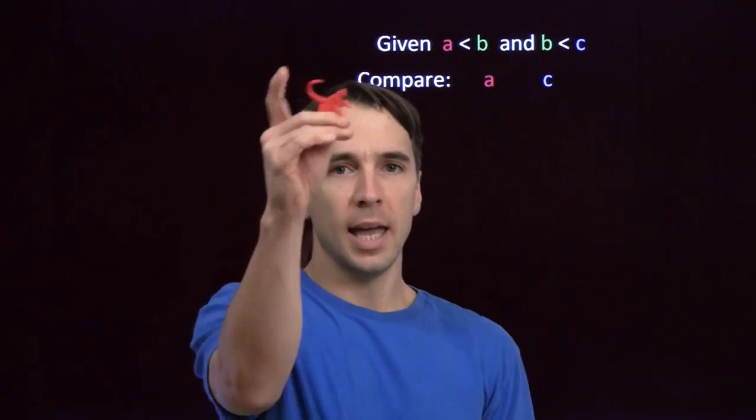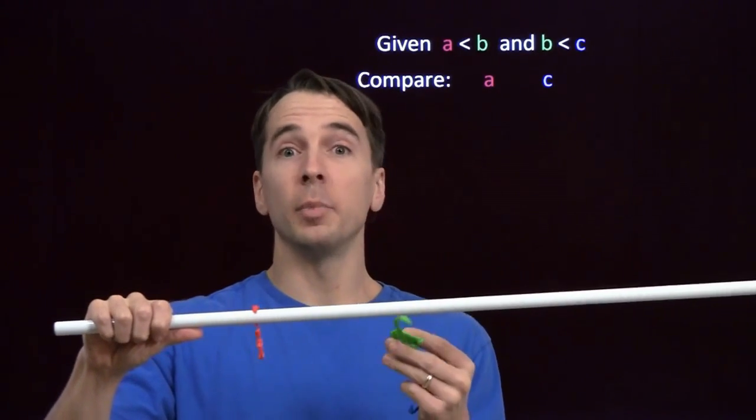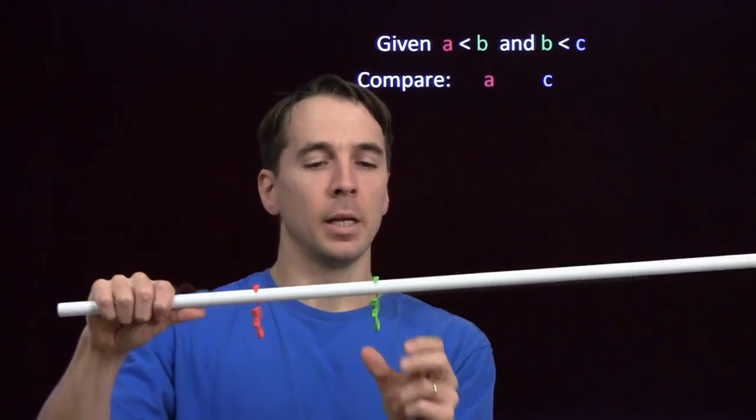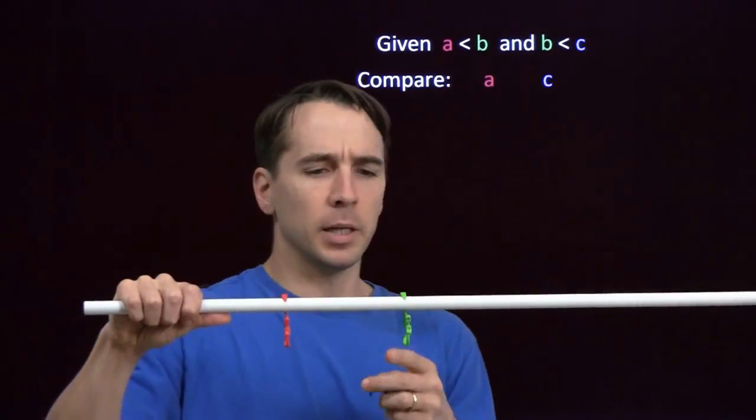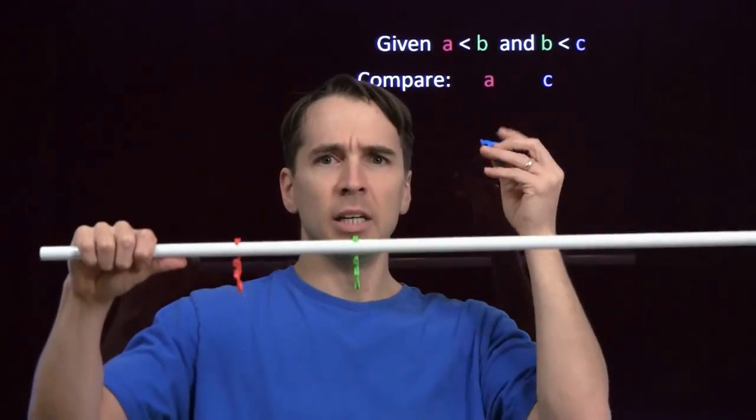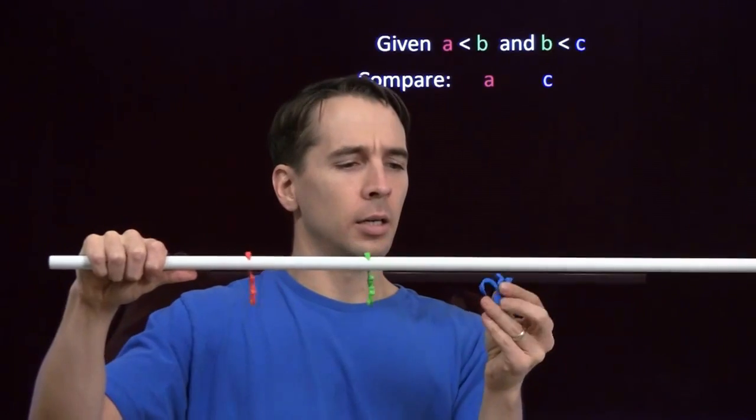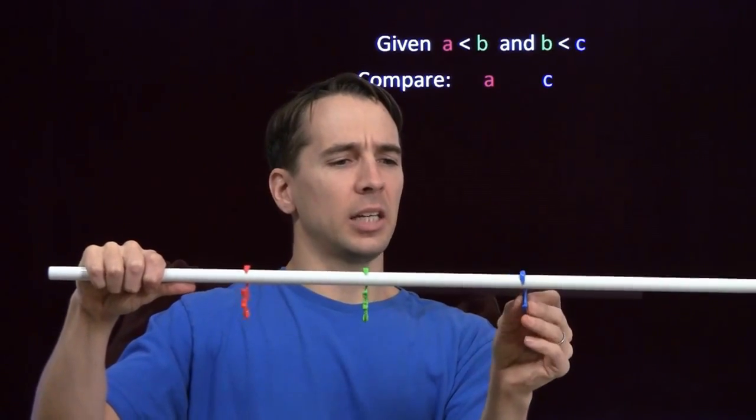All right, we'll start with a is less than b. Well, we know what that means. That means that monkey a is to the left of monkey b. And b is less than c. That means monkey b is to the left of c. That means monkey c is to the right of b. So it's going to be out here somewhere.